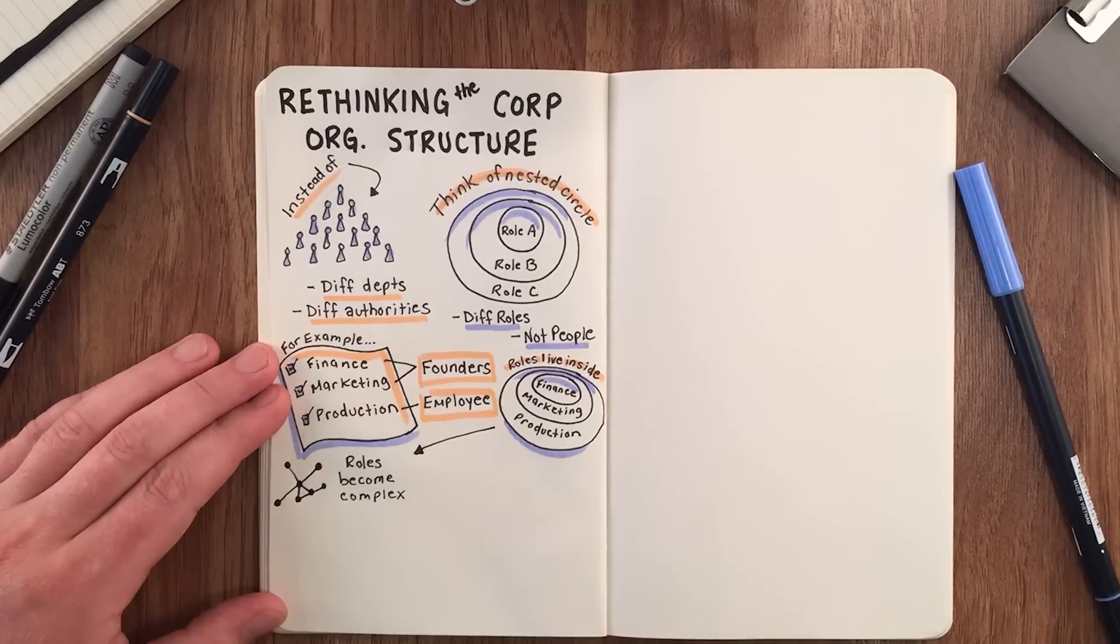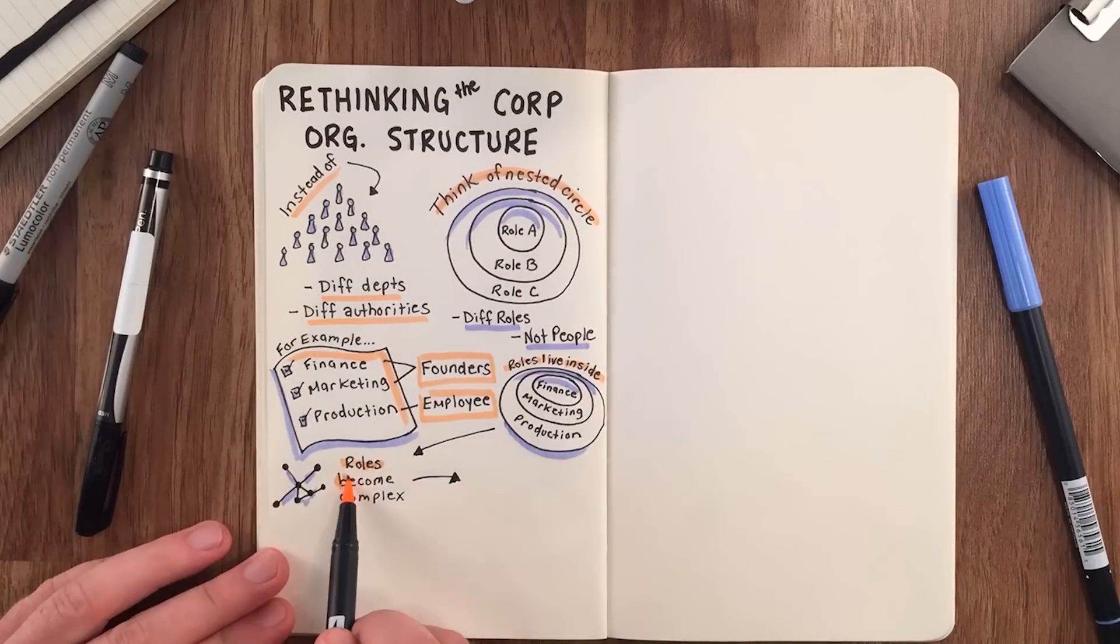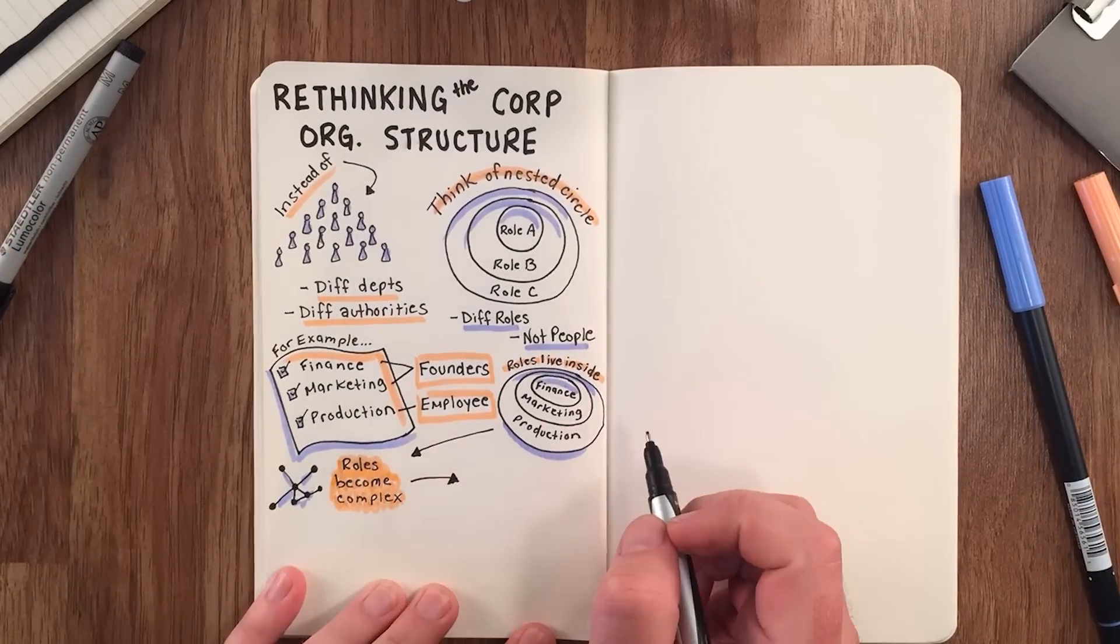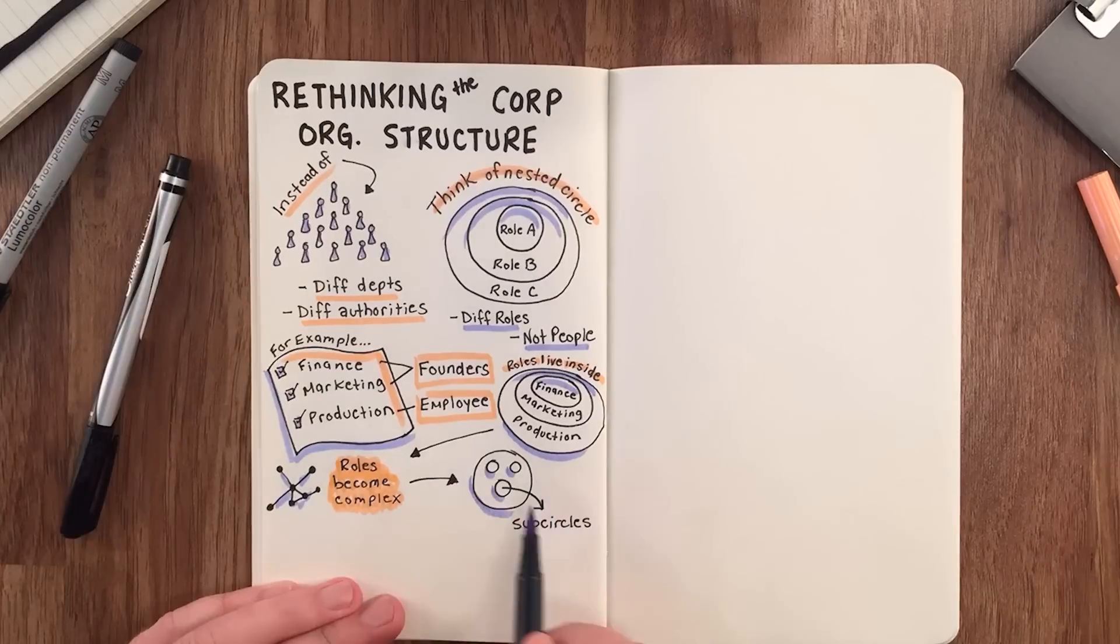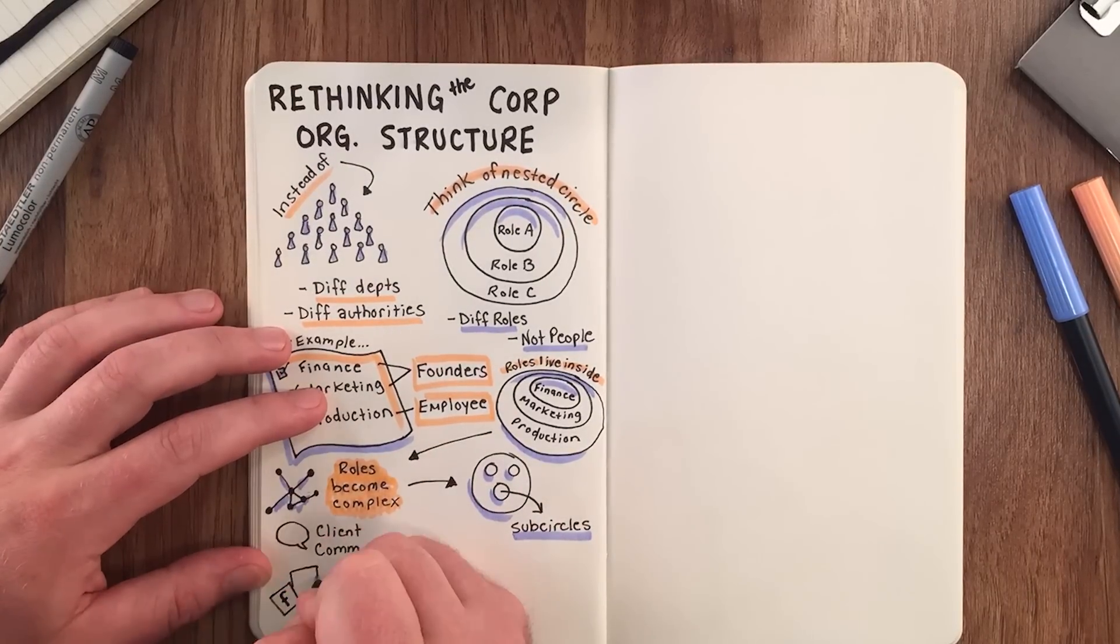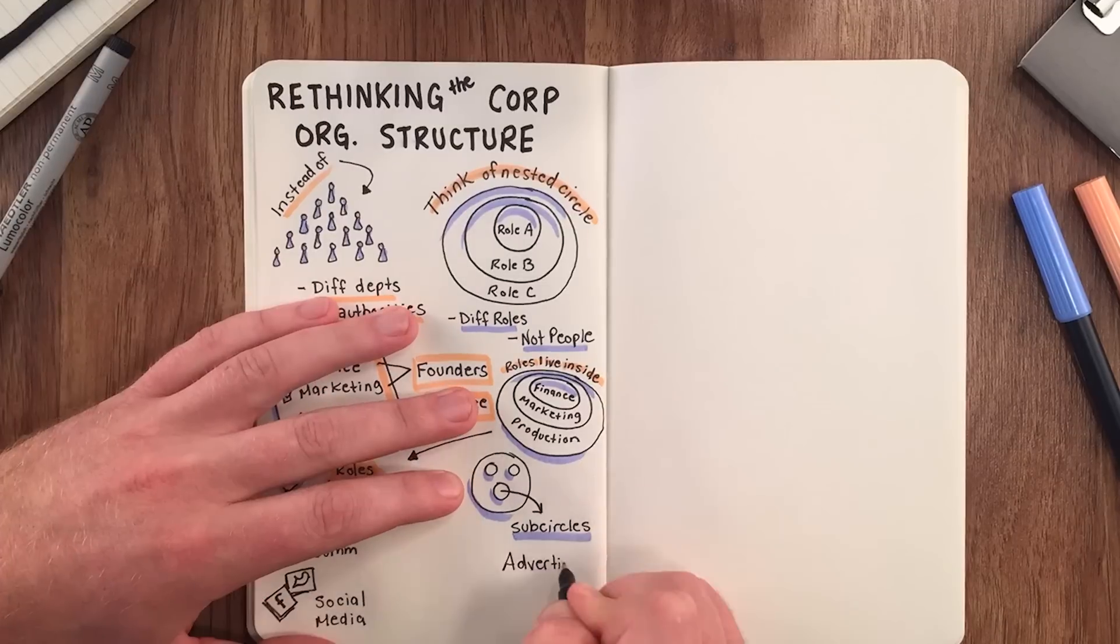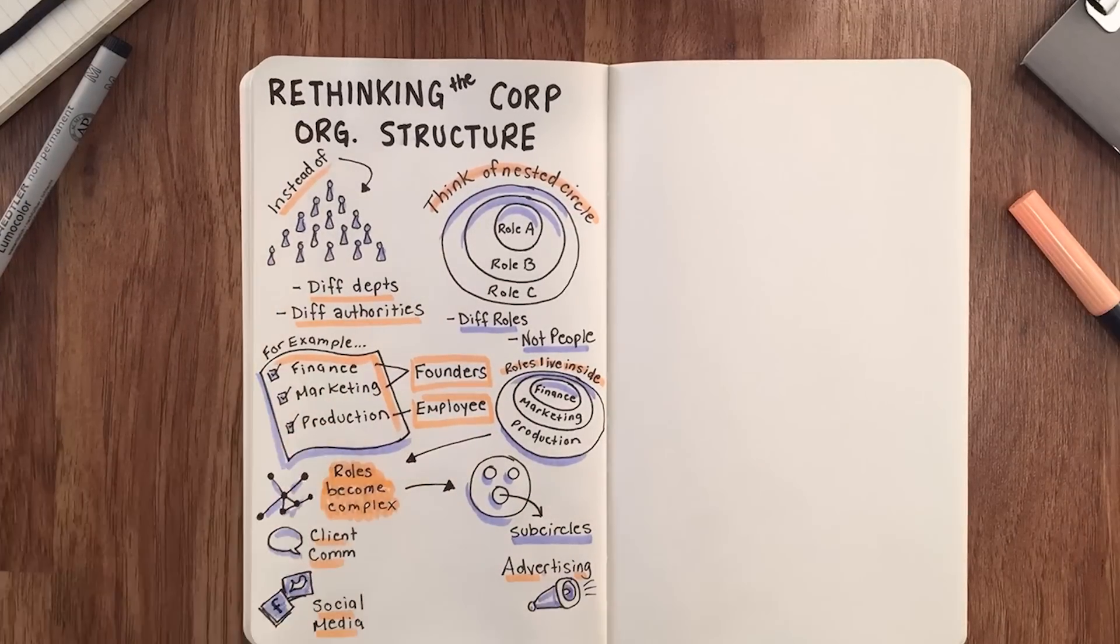As a company evolves and roles become too complex, they can break into sub-circles. In the previous example, the marketing role can later evolve into a marketing circle that encompasses the roles of client communications, advertising, and social media.